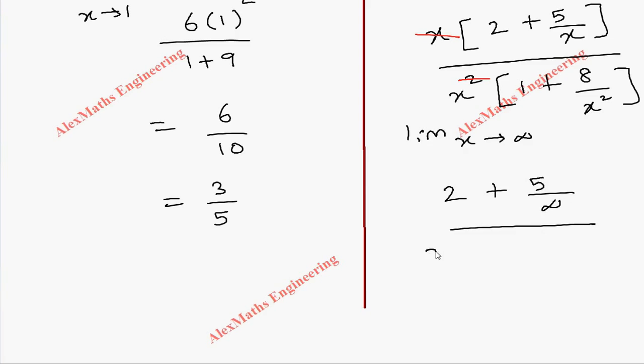And denominator we still have an x term outside. But when I substitute infinity here, then the remaining term will be 1 plus 8 by infinity square. Anything divided by infinity is 0.